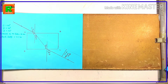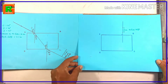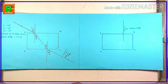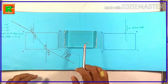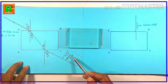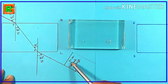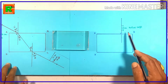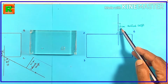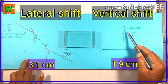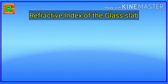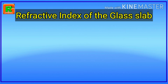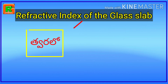Conclusion of this video: by these two activities, we found that the lateral shift of this glass slab is 3.1 cm and the vertical shift is 1.9 cm. In the next video, we will see how to find the refractive index of the glass slab using the value of its vertical shift.